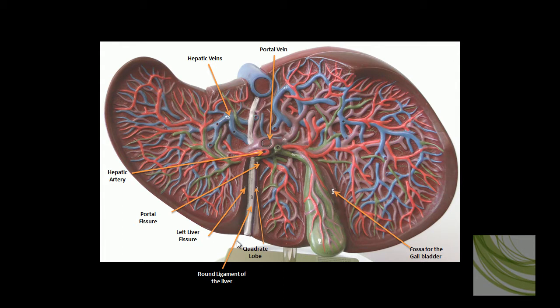Then we have the round ligament of the liver, also known as the ligamentum teres, which divides the left part of the liver into both medial and lateral sections. Other structures of note on this view of the liver model are the hepatic artery, the quadrate lobe, and the left liver fissure.